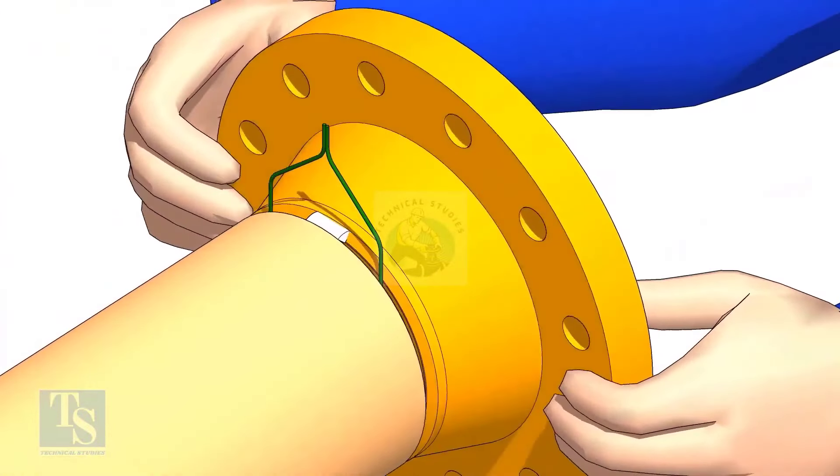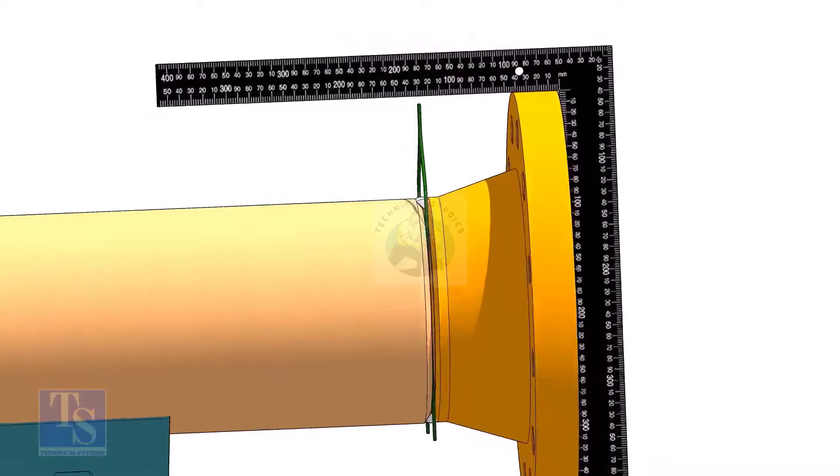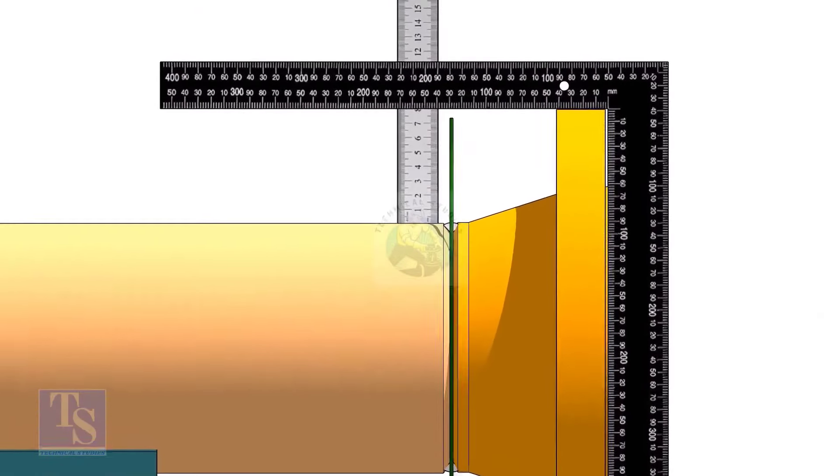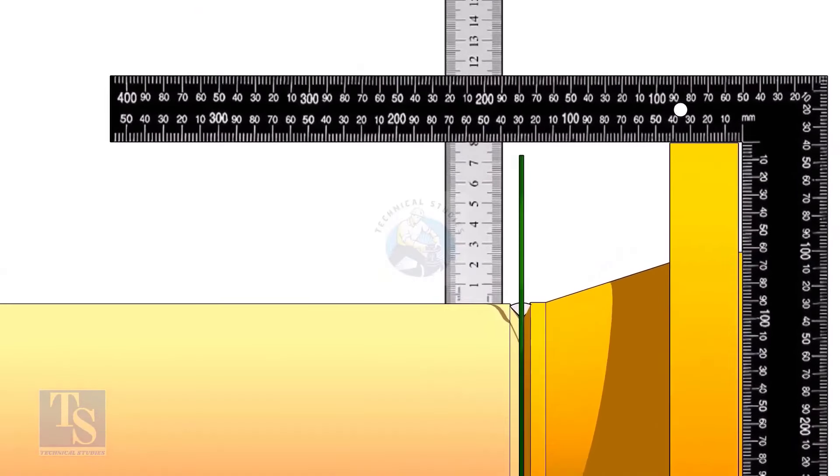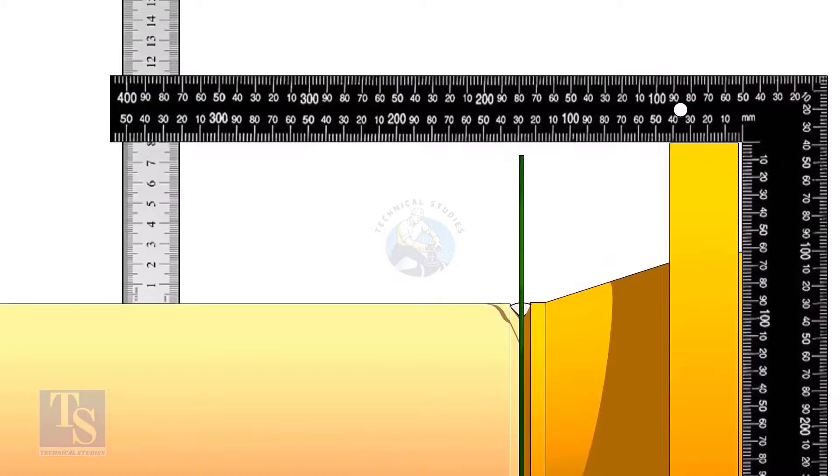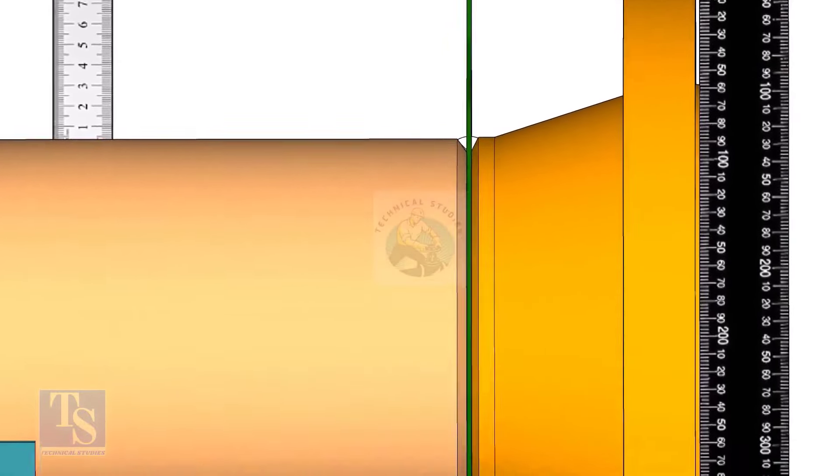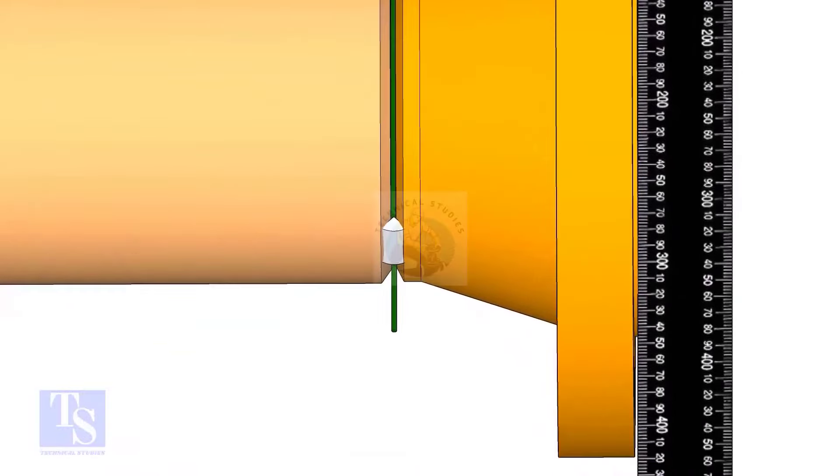Hold the flange with a gap rod in the joint. Tack weld on top side of the joint. Check the squareness of flange face to the pipe as shown. Tack weld at the bottom side of the joint.